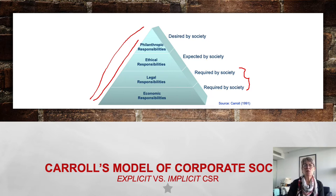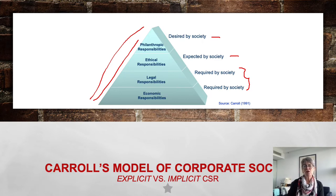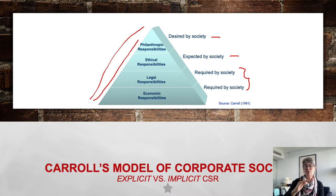Moving up, we get into ethical responsibilities, where we start to look at those theoretical lenses and what's expected by society. The final level is philanthropic responsibilities, which are desired by society. That's almost the epitome of the pyramid - you've built those foundations of legal and economic, moved through ethical responsibilities, and now you're looking at philanthropic responsibilities.